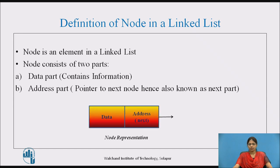This is the node representation, which consists of two parts — the data part and the address part. The data part holds the information whereas the address part holds the address of the next node.